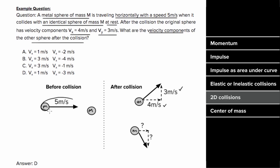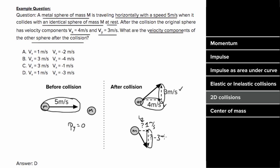So if we started with five units of momentum in the x direction, we have to end with five units of momentum in the x direction, so the x component of the second sphere has to be one meter per second. And since we started with no momentum in the vertical direction initially, we have to end with no momentum vertically. So if the first sphere has three units of momentum vertically after the collision, then the second sphere has to have three units of momentum vertically downward after the collision, which gives us an answer of D.